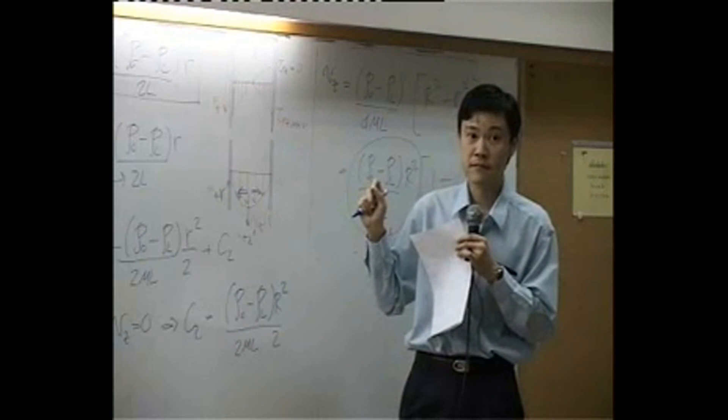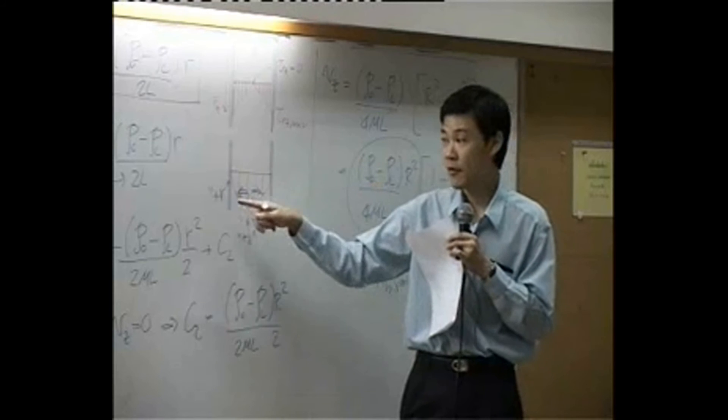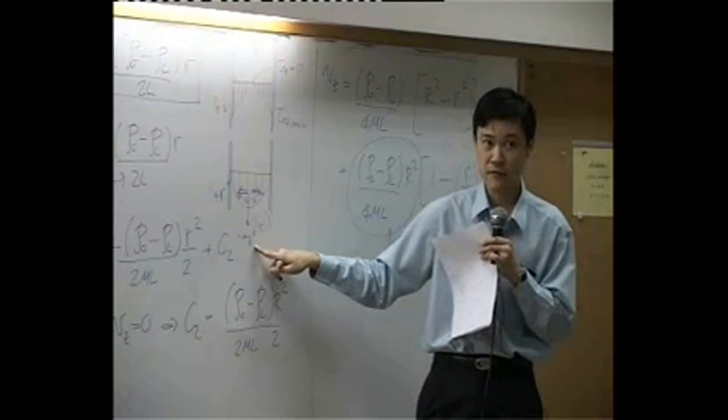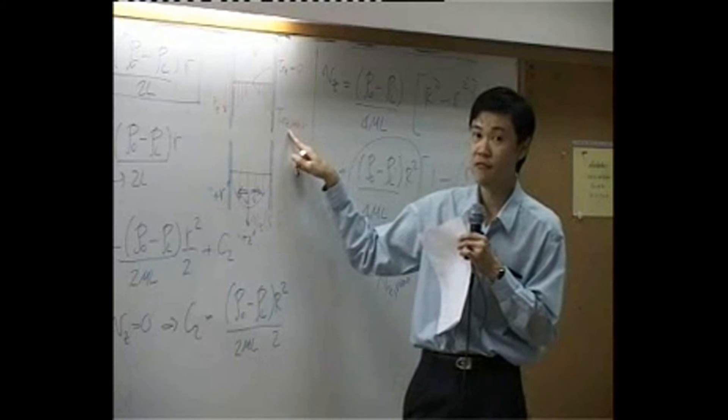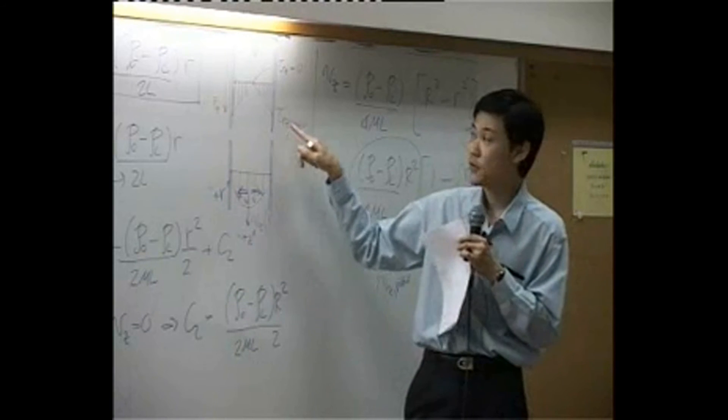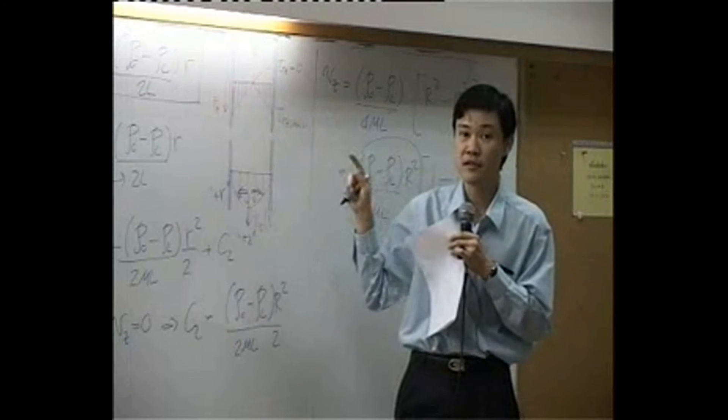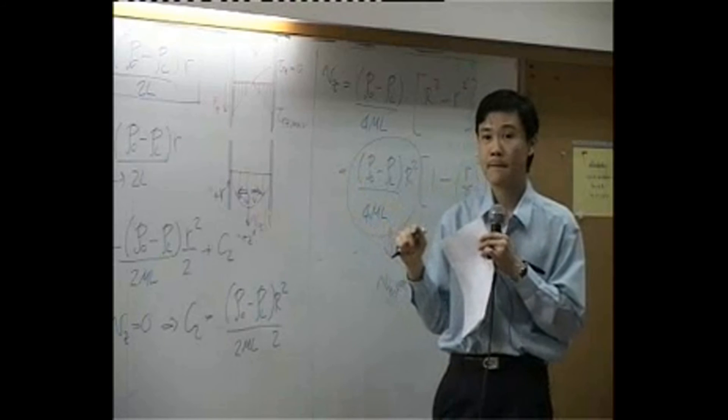So therefore, your tensor tau rz is supposed to be positive. Both r direction and z direction are positive, so therefore tau rz will be positive as well. You can see it's going down along z direction - these two parts are positive numbers.